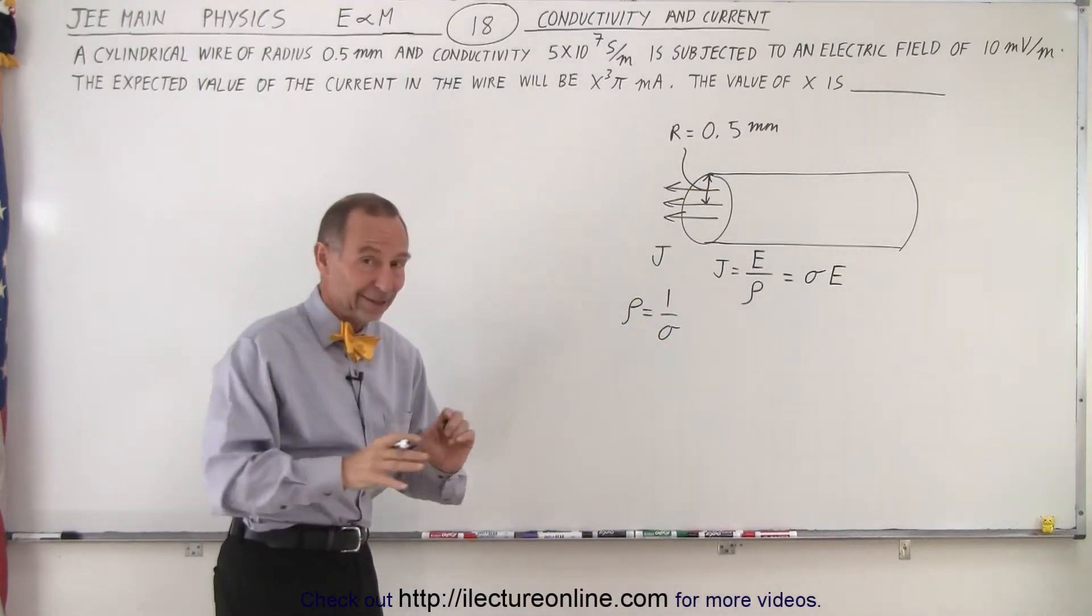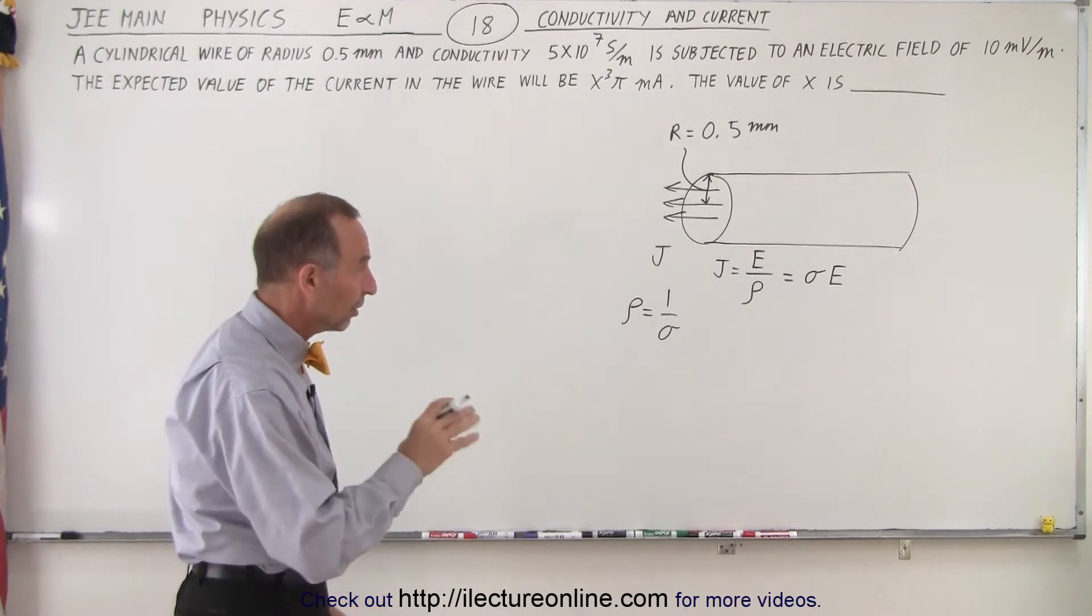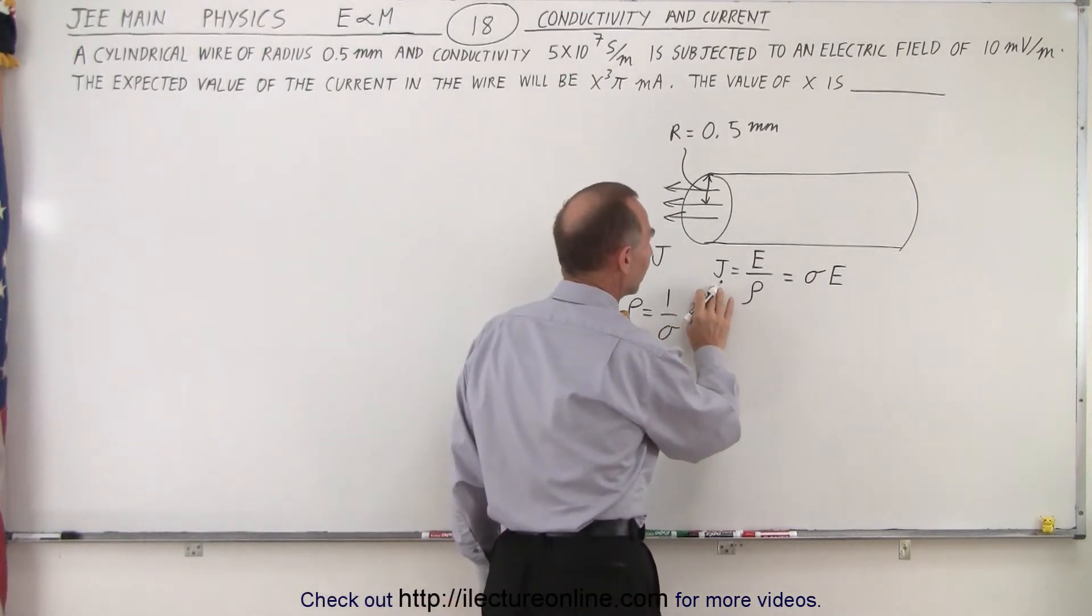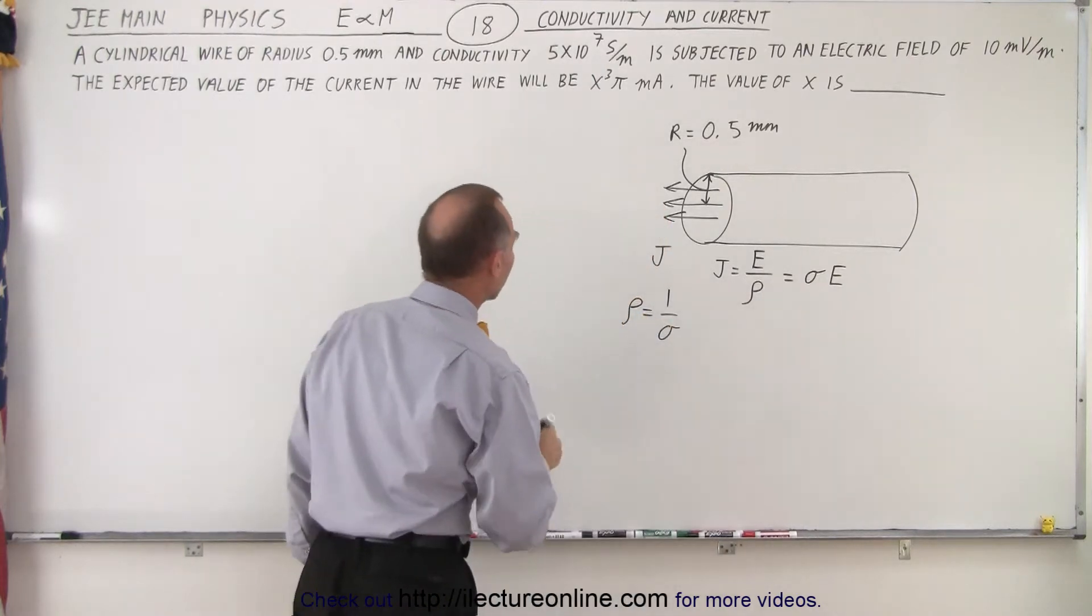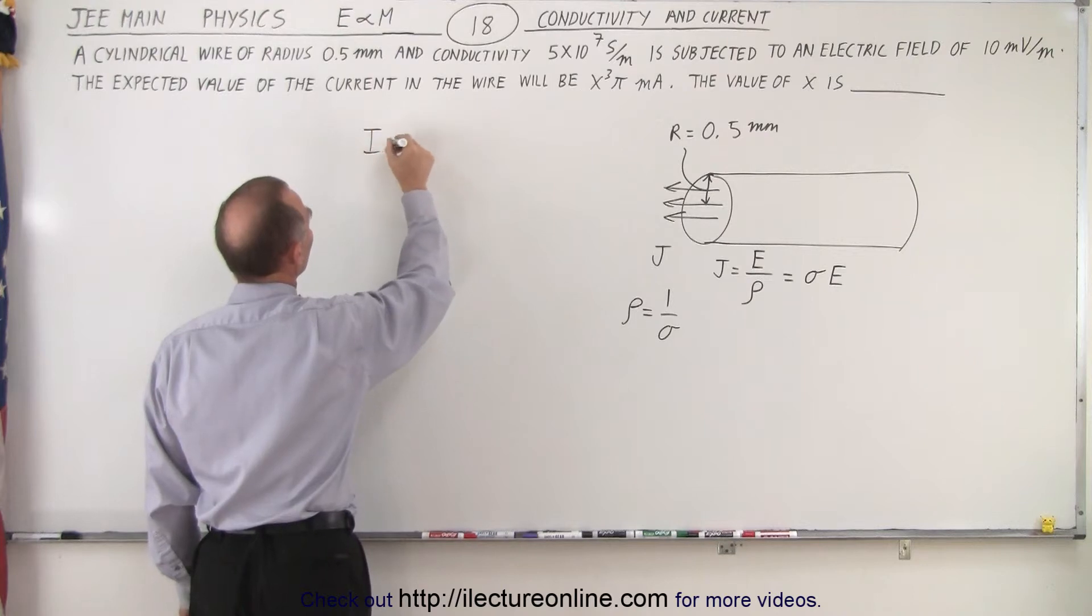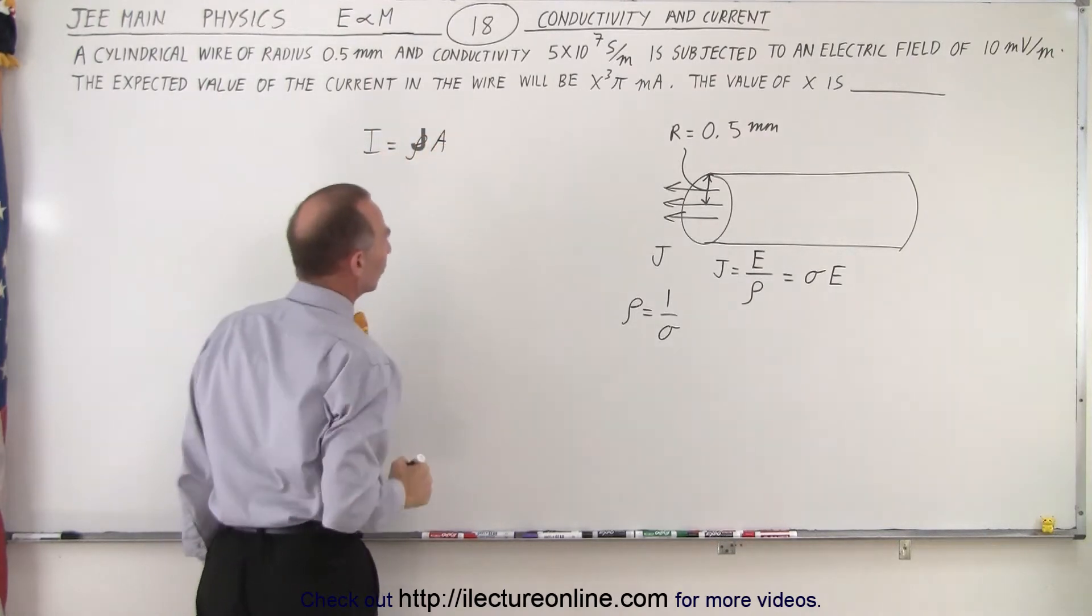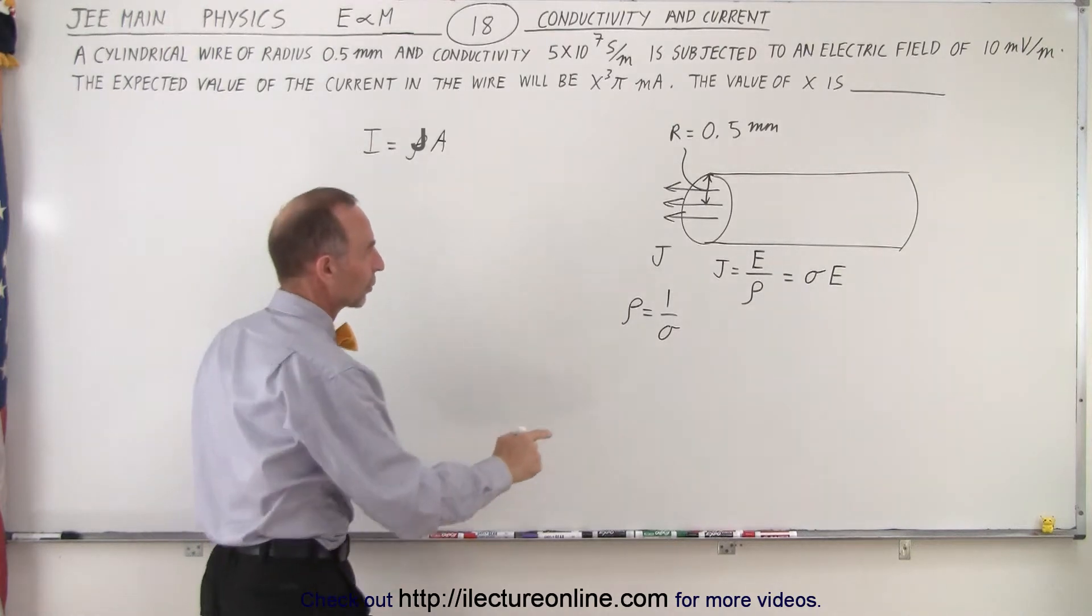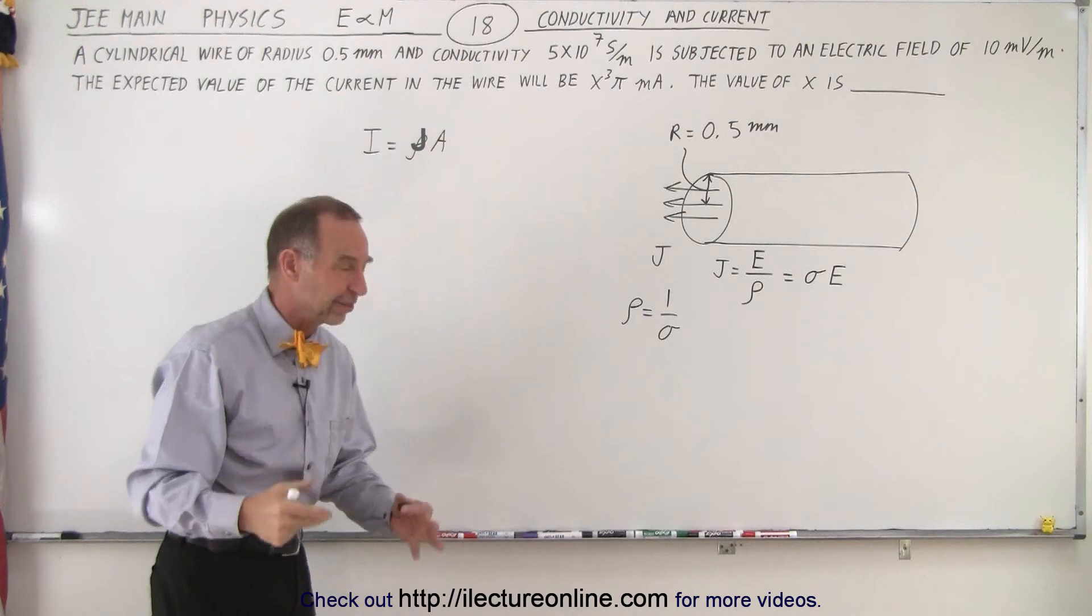If you don't remember that, you don't have much of a chance of getting this problem correct. So this at least gives us a way to find the current density, and then the equation to find the current i is going to be equal to the current density times the cross-sectional area A. So once we have the current density, we plug it in here to find i, and then we should be able to get the answer.